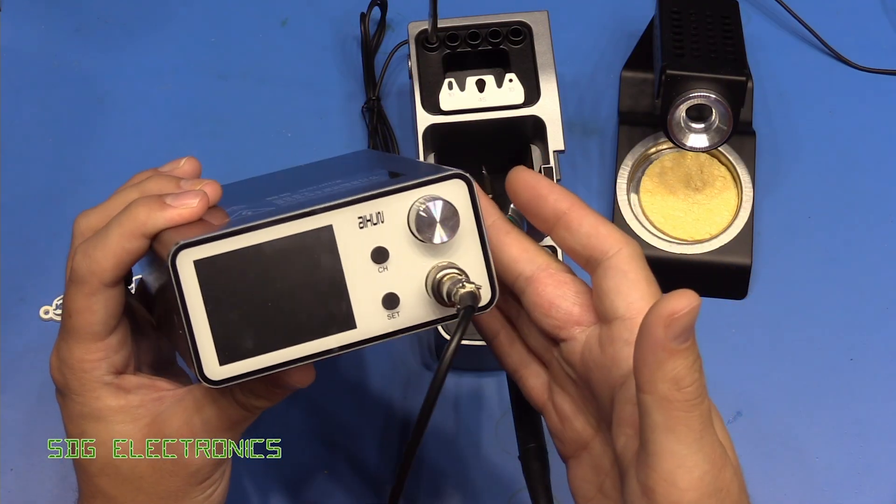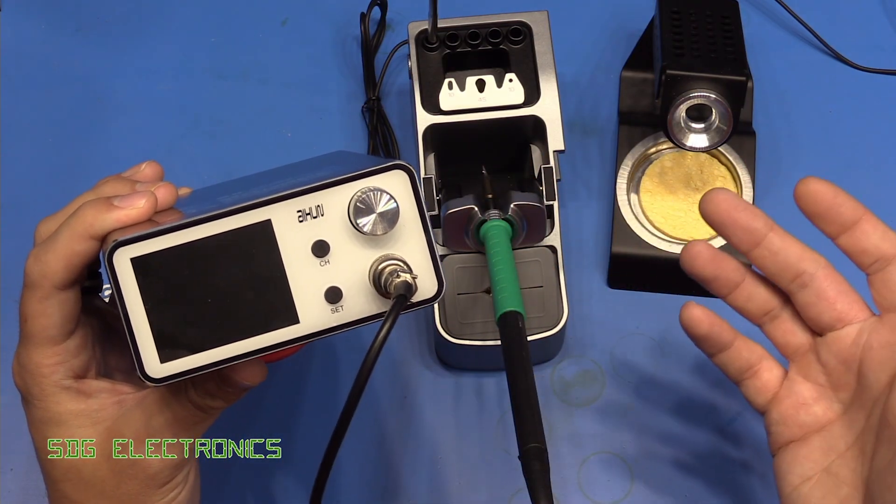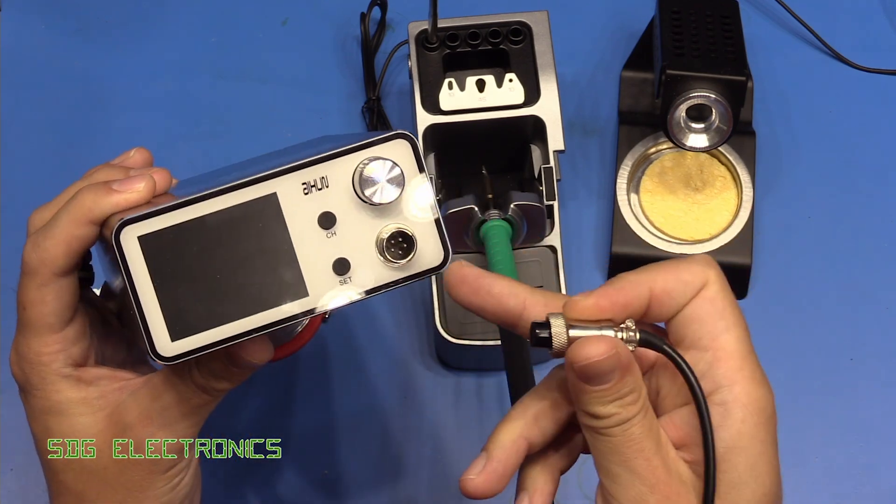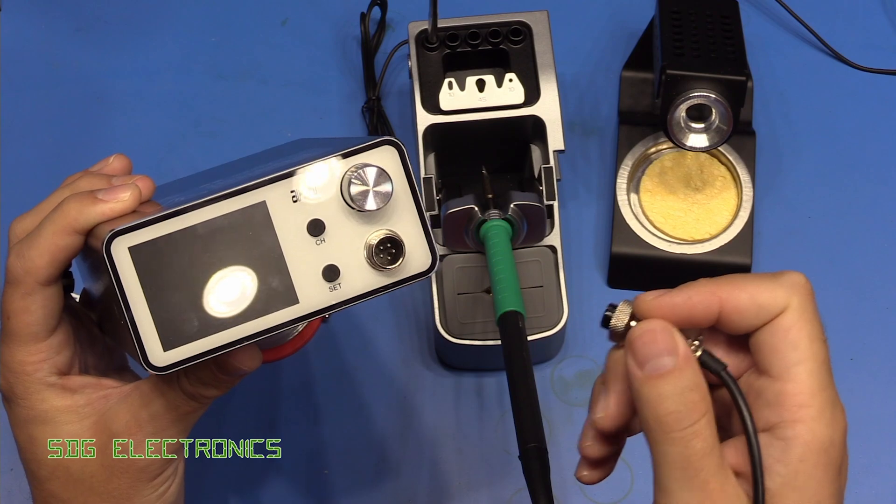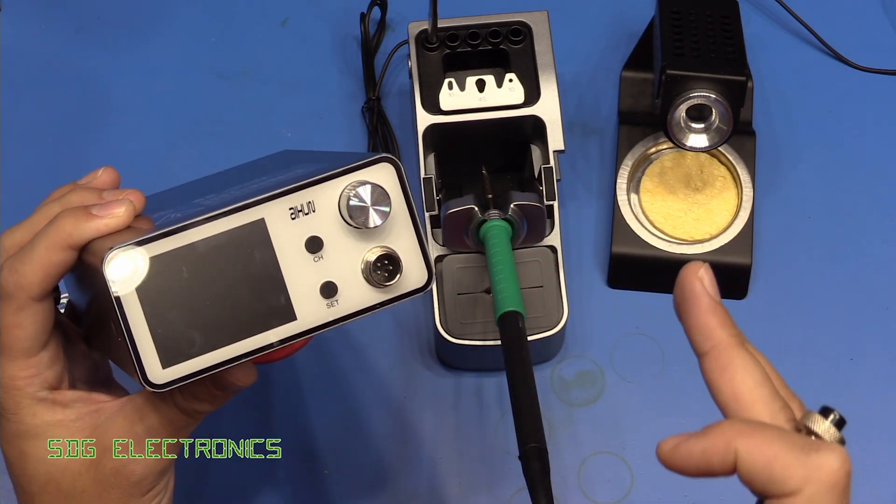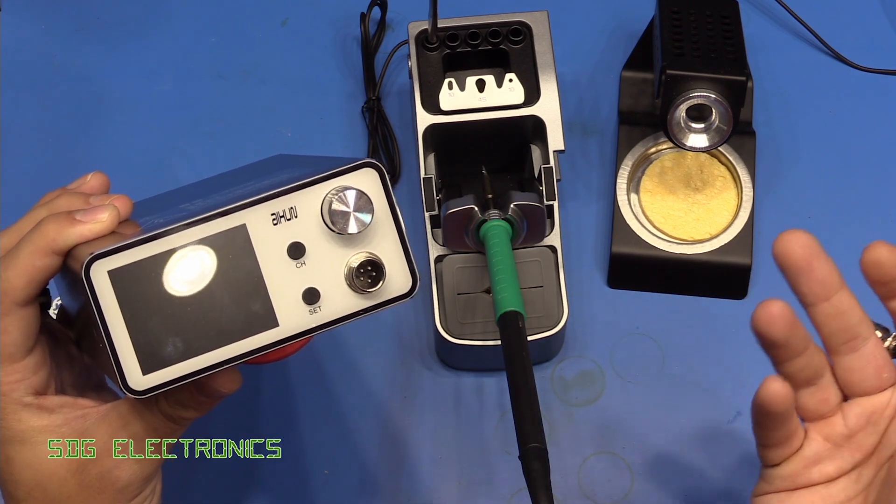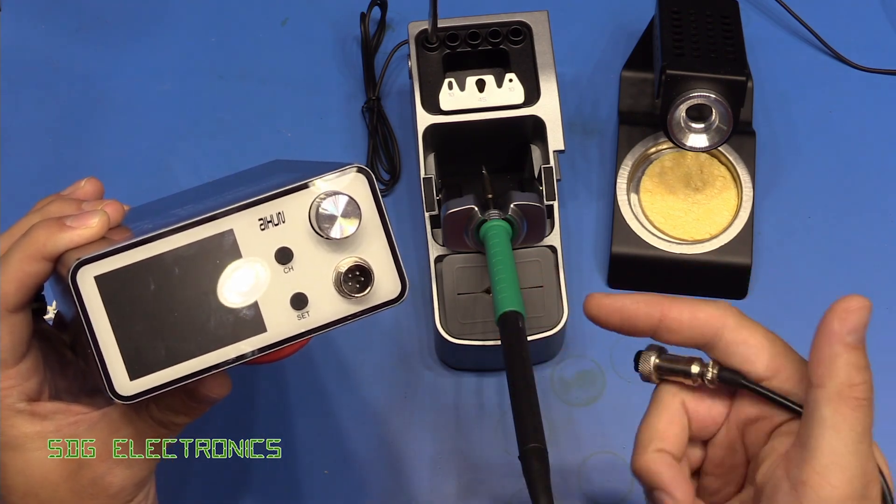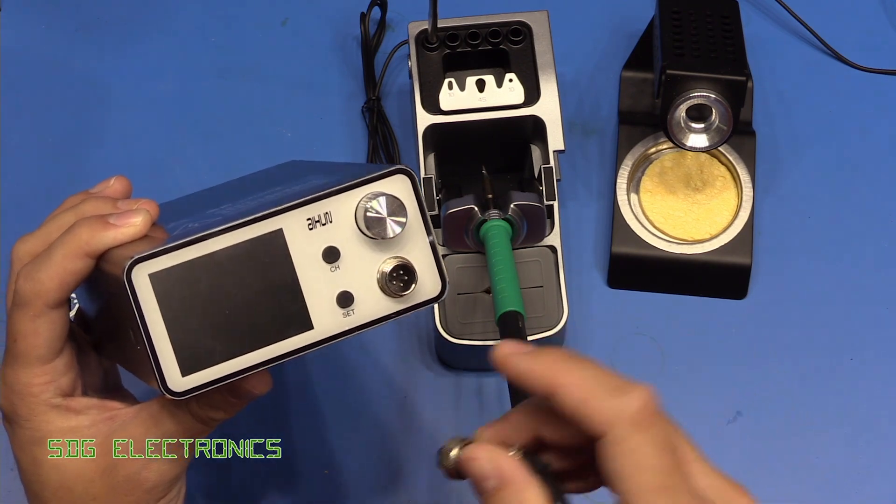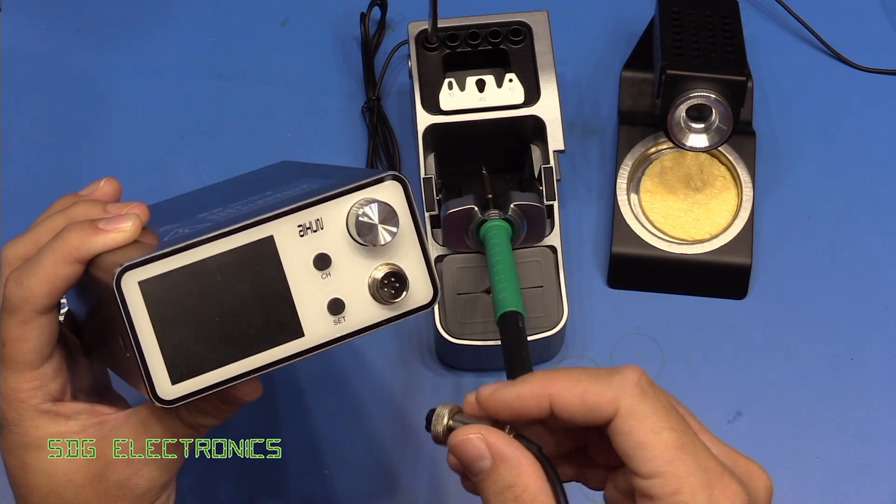On the T3A, you can actually use the T12 and the 936 handpieces without any kind of modification. You just plug in the connector into here, and it will detect that it's a different handpiece and drive it accordingly. However, a word of warning, there are various different types of T12 handpiece. Some of them have sense resistors in different places. So you might need to pick the right one.